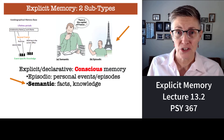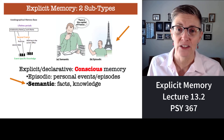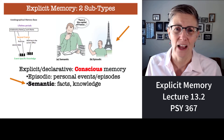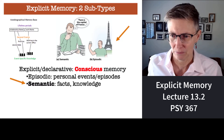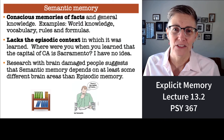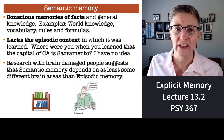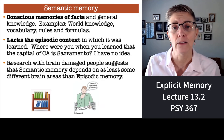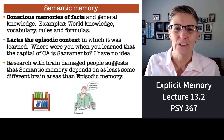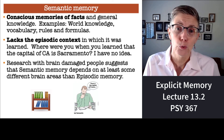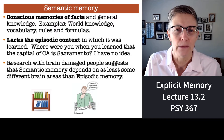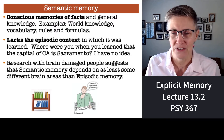Now let's switch to the other kind of explicit memory — your memory for facts, for general knowledge: semantic memory. Your conscious memory of facts. For example, you know that the capital of California is Sacramento, you know vocabulary, you know rules like at a red light we stop and when the light turns green we go. These are all semantic memories.